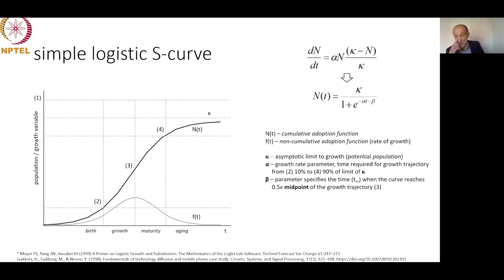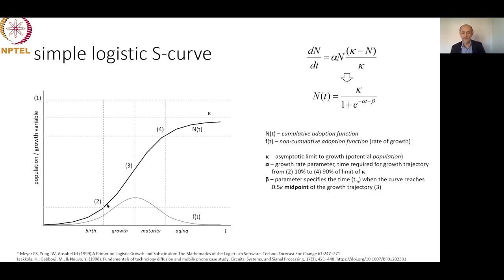Let us look at the meaning of the parameters. N(T) is the cumulative adoption function — the cumulative rate of growth over time. F(T) is the non-cumulative adoption, representing the bell-shaped growth curve. The parameter T represents the upper limit of growth. Our system grows and never quite reaches this upper limit before being substituted by another system. For different systems, this upper limit depends on different kinds of limitations — usually capped by available resources.